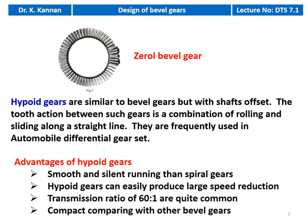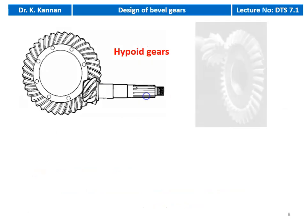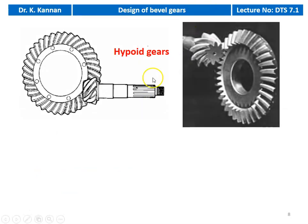Advantages of hypoid gears include smooth and silent running compared to spiral gears, and they can easily produce large speed reductions — transmission ratios as high as 60:1 are quite common — making them compact compared to other types of bevel gear. The pinion and gear centers are offset in hypoid gears.